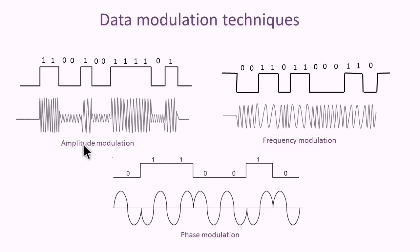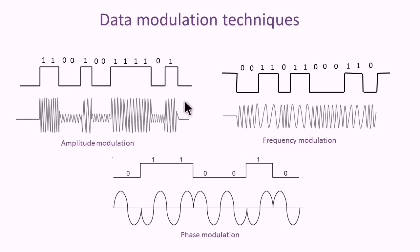The first is amplitude modulation. With this type, the amplitude of the carrier wave varies proportionally with the amplitude of the data signal to be transmitted. AM modulation is strongly affected by noise. With frequency modulation, the carrier amplitude remains constant.